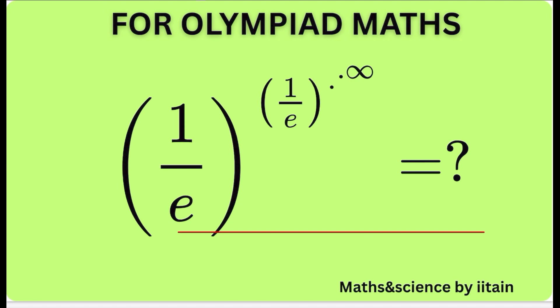The natural logarithm is ln to the base E. Log to the base E is called ln, natural logarithm. The value of E is a constant, which is nothing but 2.718. This is a standard constant value.